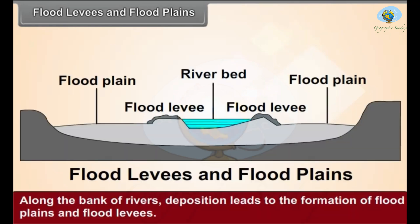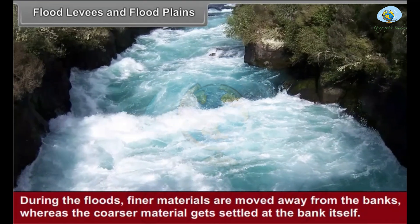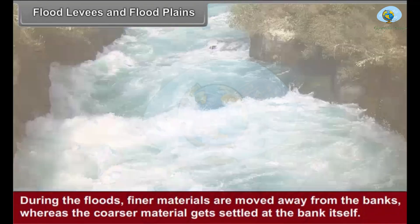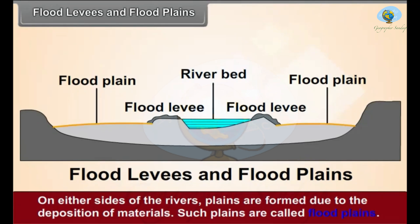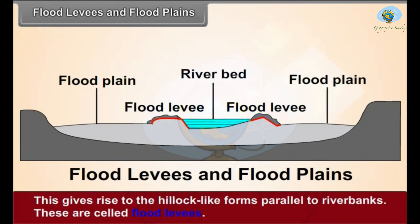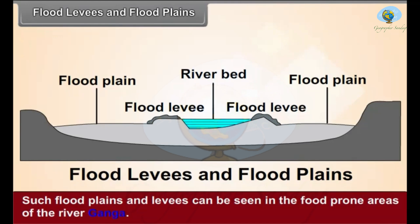Flood levees and flood plains: Along the banks of rivers, deposition leads to the formation of flood plains and flood levees. During floods, finer materials are moved away from the banks whereas coarser material gets settled at the banks. On either side of the river, plains formed due to deposition of materials are called flood plains. The elevation along the bank increases due to deposition of coarser material, giving rise to hillock-like forms parallel to river banks called flood levees. Such flood plains and levees can be seen in the flood-prone areas of the river Ganga.